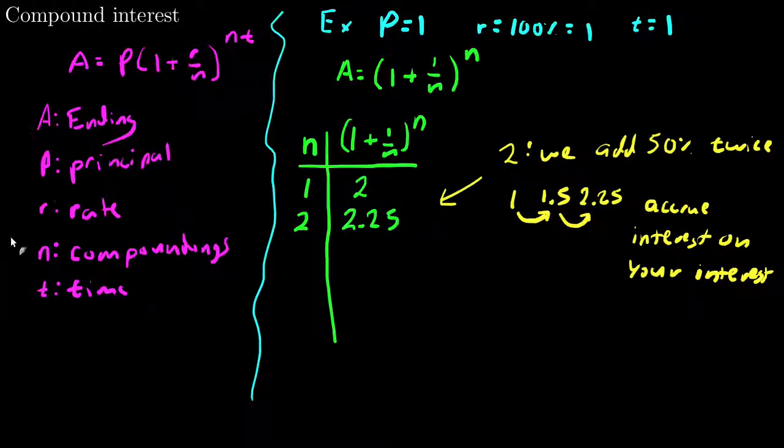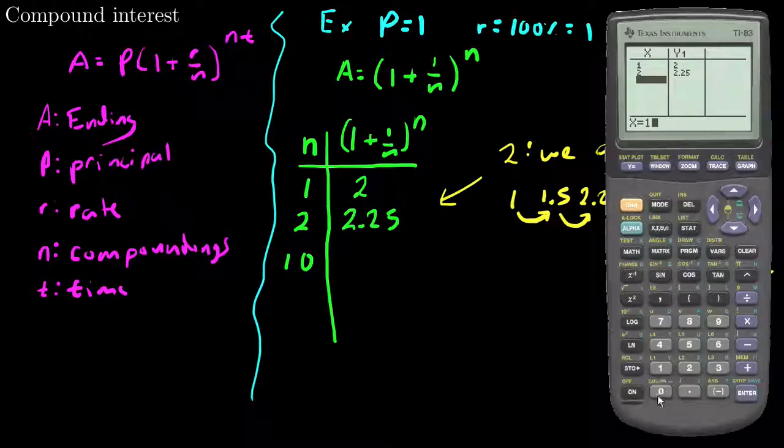Let's consider what happens when we get to a reasonably larger number, 10, which means instead of doing 100% one time, I'm going to do 10% 10 times. If I put 10 in, I get 2.594-ish, 2.5937.